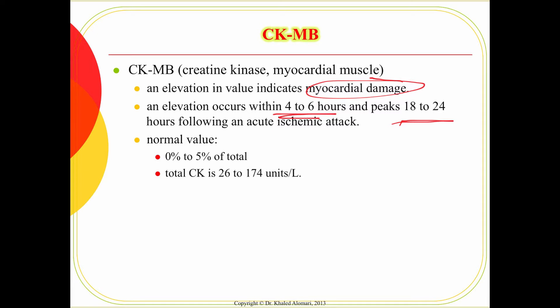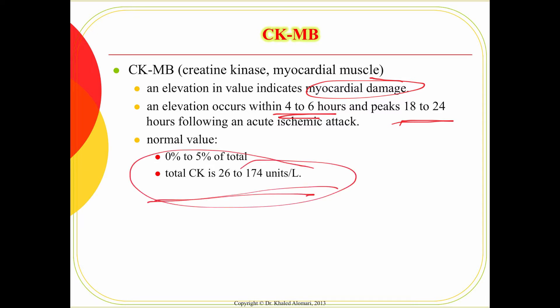Normally, CKMB should be about 5% or less of the total CK. The total CK reference range is about 26 to 47. CK comes from the brain, skeletal muscles, and heart with any injury — isolating the MB fraction is how we use it as a reference for cardiac damage.